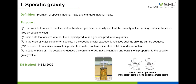Let's learn about the test method of specific gravity. Specific gravity is the ratio of a specific material mass to a standard material mass. The purpose of this test: first, it is possible to confirm that the product has been produced normally and that the quantity of the packing container has been filled. This is basic data to confirm whether the supplied product is genuine. In the case of water-soluble W1 species, if the specific gravity exceeds 1, additives such as chlorine can be deduced. In the case of base oil, it is possible to deduce the contents of aromatic, naphthenic, and paraffinic components in proportion to the specific gravity value.